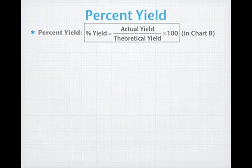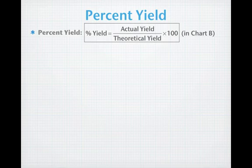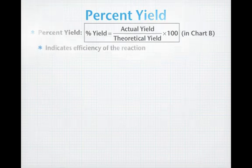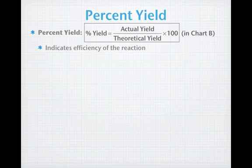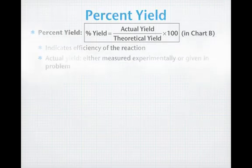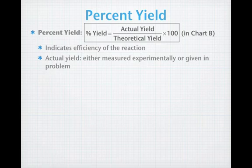Percent yield is given by an equation which you actually have on your Chart B. Percent yield is the ratio of the actual yield to the theoretical yield, which you just calculated, multiplied by 100. Percent yield is really an indication of the efficiency of a reaction. You want this to be as close as possible to 100%, unlike percent error which you want to be down at zero. The closer you are to 100%, the more efficient your reaction, the better your technique. Everything seems to be working well when you're close to 100%. The actual yield is something that you're either going to measure experimentally - we have a lab coming up in which we'll do that - or in the problems, you're going to be given the actual yield to use to determine the percent yield when you calculate the theoretical yield.